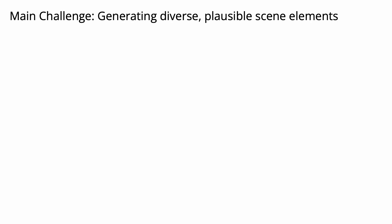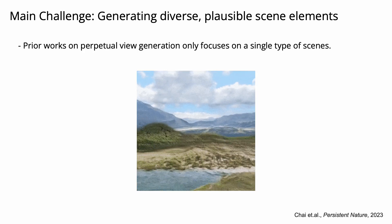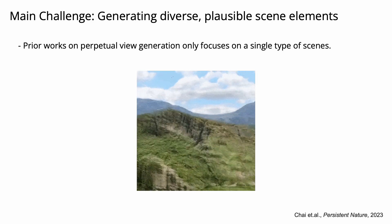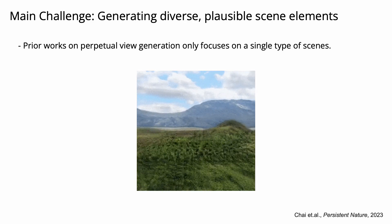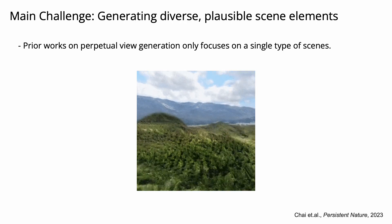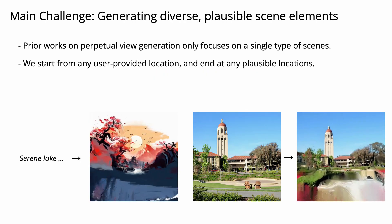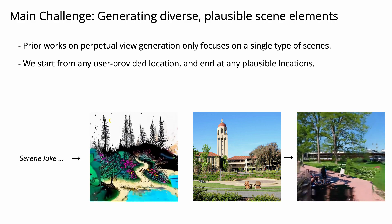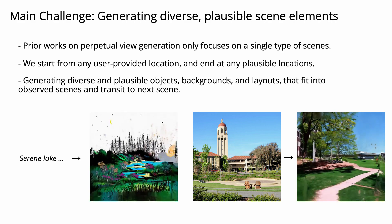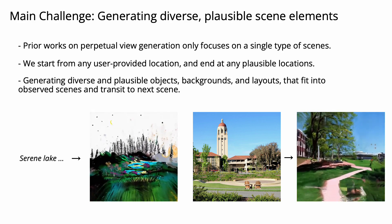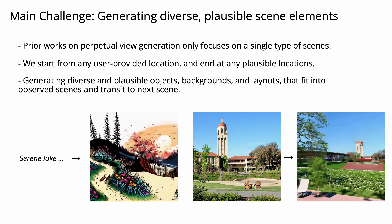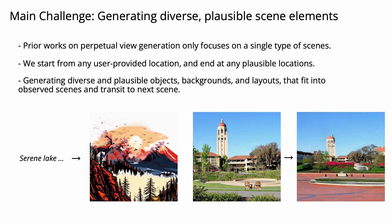The main challenge is in generating diverse and plausible scene elements. Consider prior work on perpetual view generation — they synthesize nature videos, yet the videos only have nature elements such as grass and water. Instead, we want to start from any user-provided location and end at any plausible location. Therefore, we need to generate diverse and plausible objects, backgrounds, and spatial layouts that fit into the observed scene and transition naturally to the next scene.